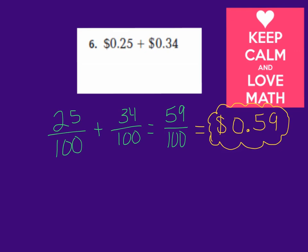Okay, let's go over the answer together. If I have 25 cents, it's equivalent to 25 hundredths, plus 34 cents is equivalent to 34 hundredths. I was able to add these fractions as they are because both are out of hundredths. So 25 plus 34 gives me 59, and my denominator stays 100. 59 hundredths was the sum. But remember both of our numbers were in money form, so 59 hundredths is equivalent to 59 cents.